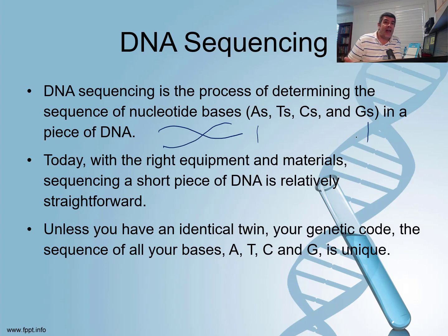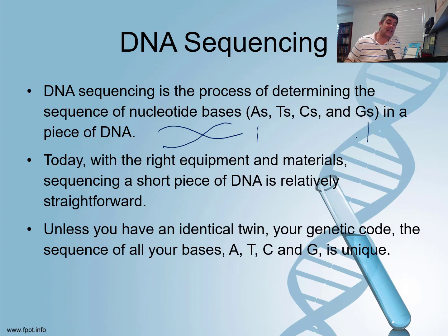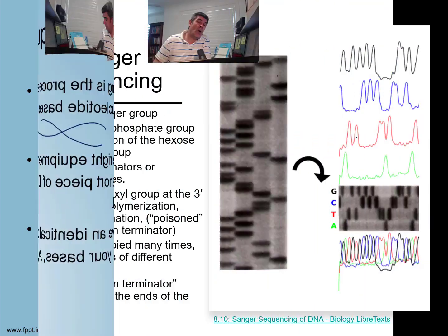We now have a lot of equipment that allows us to do this in a relatively straightforward kind of way. And the advantage of this, certainly in population genetics, is that unless you have an identical twin, you will have a unique genetic code — the sequence of bases in your DNA are going to be unique. That means if we can sequence all of this DNA, we may be able to find sections that are quite useful, as we talked about previously in our single nucleotide polymorphisms. So how do we do it?